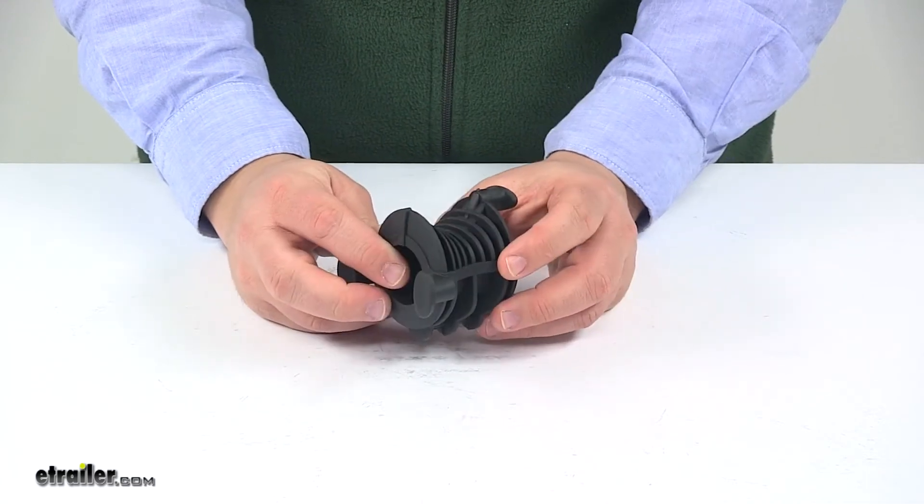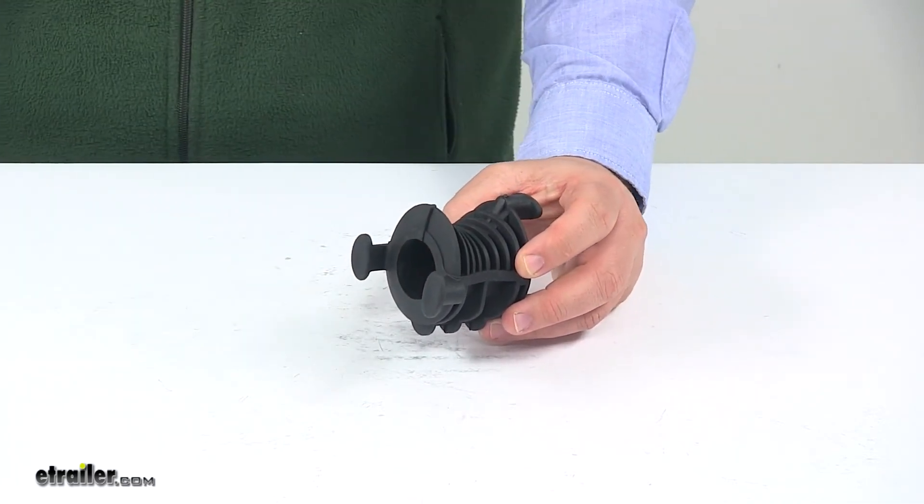That's going to do it for today's look at the replacement holdfast cradle for the Thule Vertex bike racks.